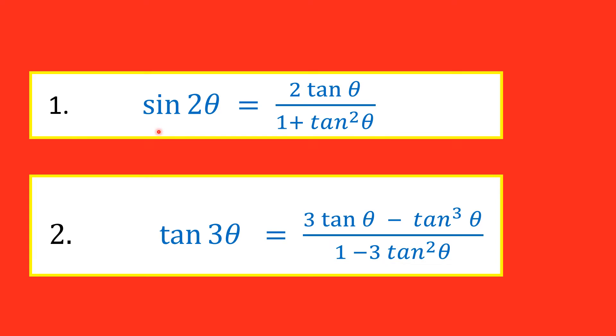Now the first is sin 2θ is equal to 2 tan θ upon 1 plus tan square θ. Second says tan 3θ is 3 tan θ minus tan cube θ whole upon 1 minus 3 tan square θ.